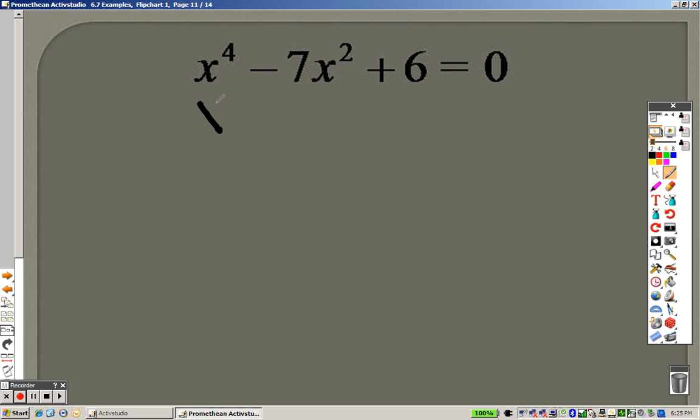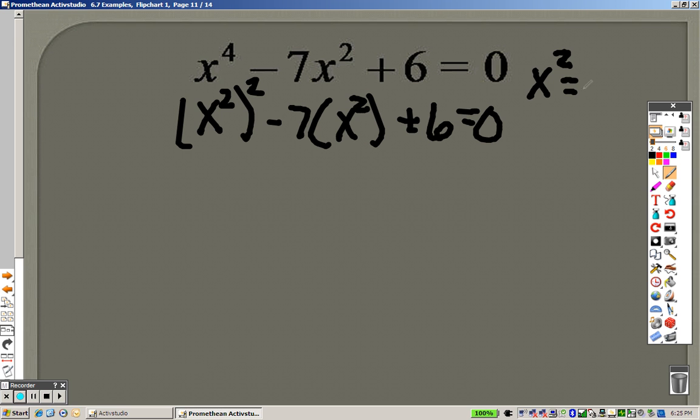We can rewrite this as x squared squared. Remember, we talked about that before. And this is x squared, and that is positive 6. I'm going to take out all the x squareds and label them as a. So really, I have a squared minus 7a plus 6 equals 0.